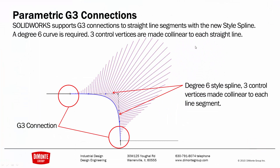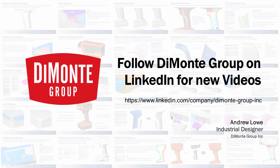Remember, you need a degree-6 style spline, and the three control vertices on one side are made co-linear to one straight line, and the three control vertices on the other side are made co-linear to the other line. Thanks for joining us this week. Please follow the Damani Group on LinkedIn — we'll be posting new videos. Hope to see you next week.